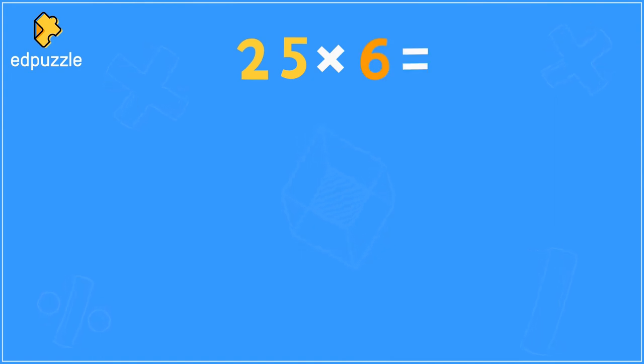Well, to use an area model, we start by drawing a box. And because we have a two-digit number, 25, we will have two parts to our box. Now the first step is to split up the number 25 into pieces, so that it is easier to multiply.